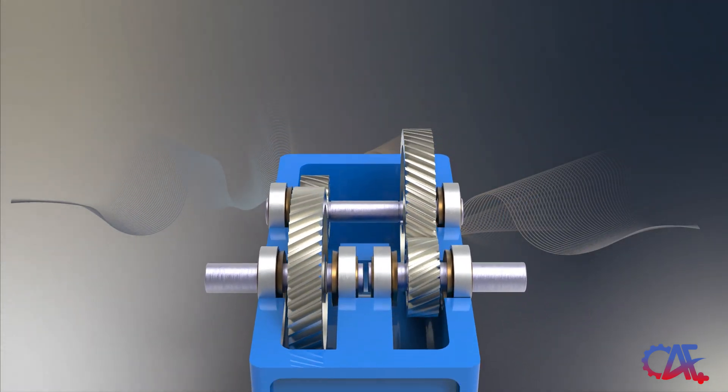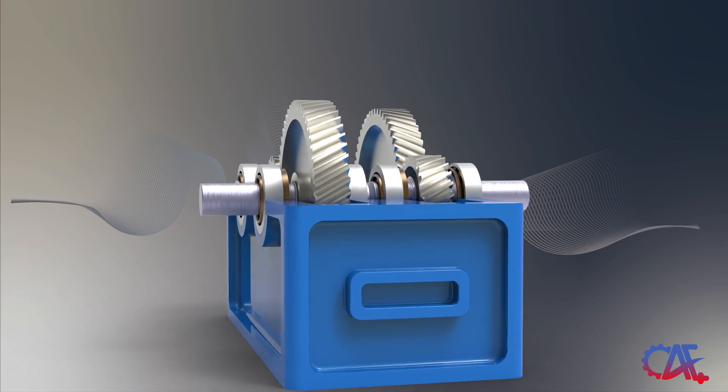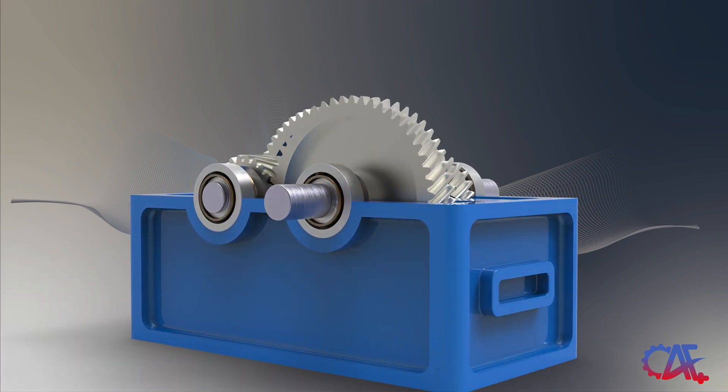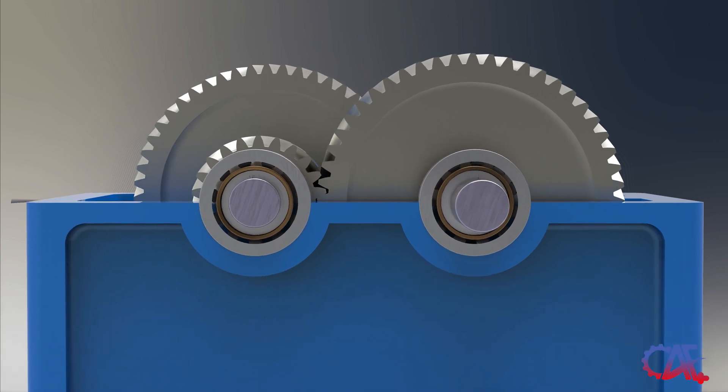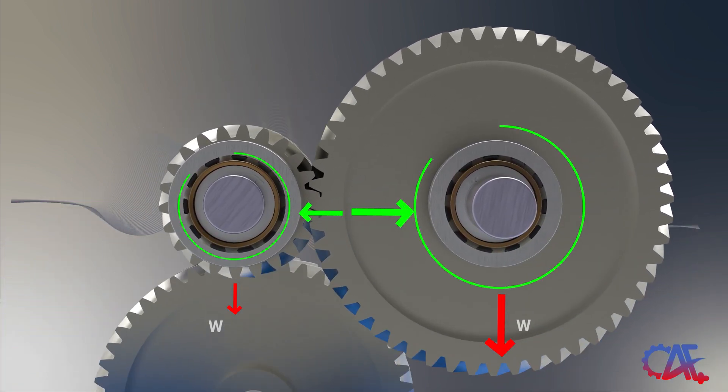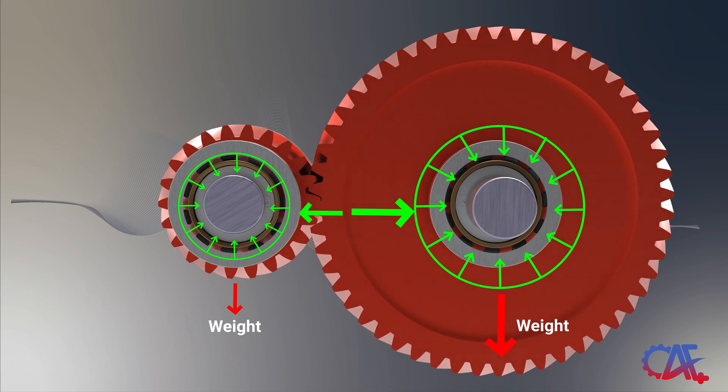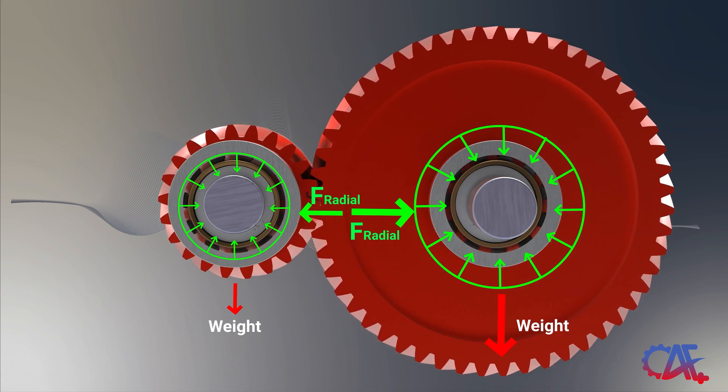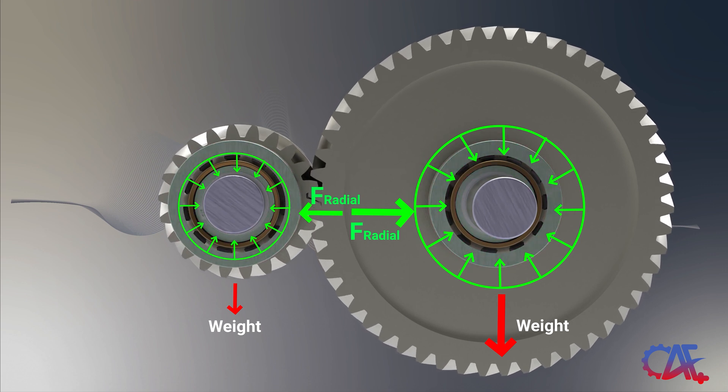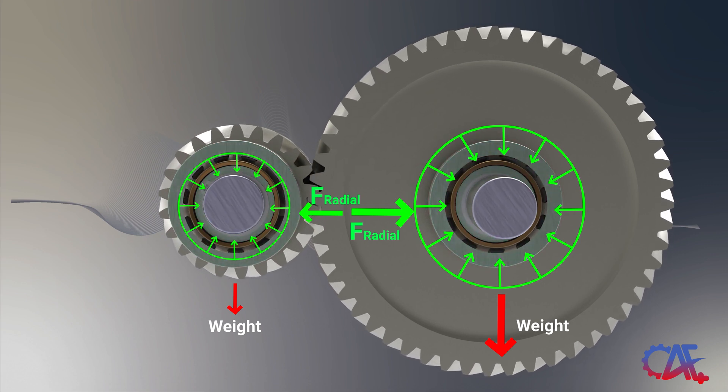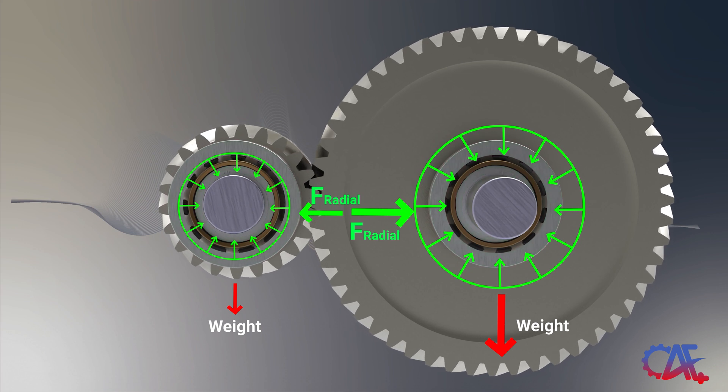Additionally, the external force from the helical gear, acting perpendicular to the shaft combined with the gravitational force from the weight of the gear, results in a radial load on its bearings. Larger and heavier gears exert more downward pressure, leading to increased radial loads on their associated tapered roller bearings. As shown in the animation, the bearing on the right-hand side experiences greater radial loads than the one on the left-hand side.